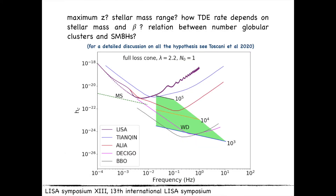To obtain sensible results, Toscani et al. made several assumptions, including the maximum redshift to consider, the stellar mass range, how the TDE rate depends on stellar mass, the distribution of penetration factors beta, and the relation between the number of globular clusters and host galaxy properties such as the supermassive black hole mass in the galaxy core. A detailed discussion of all these hypotheses is beyond the scope of this talk; please refer to Toscani et al. 2020 for details. Here I will illustrate the results in the most optimistic scenario.